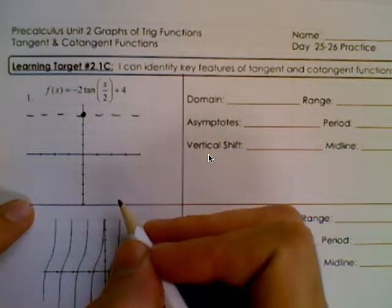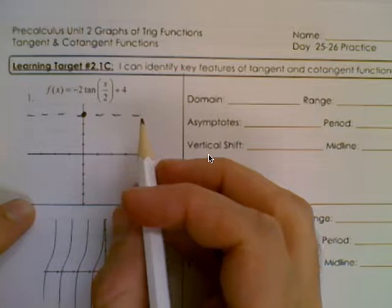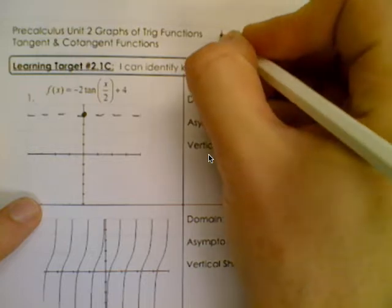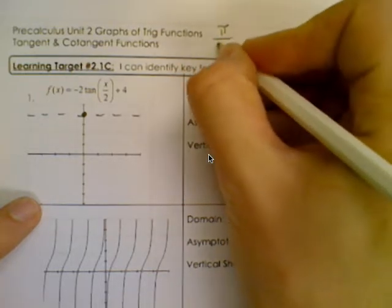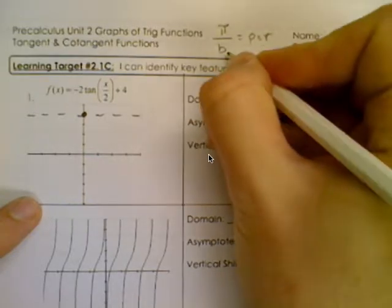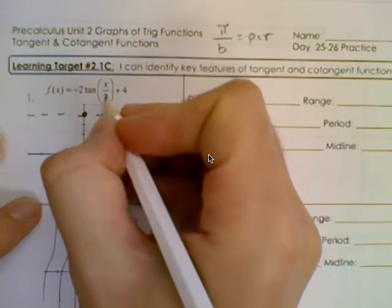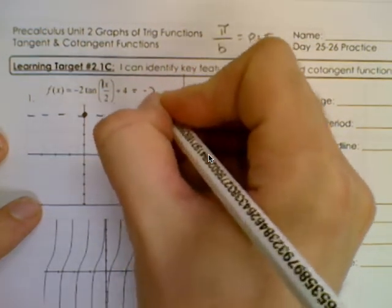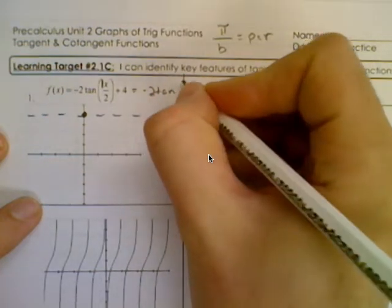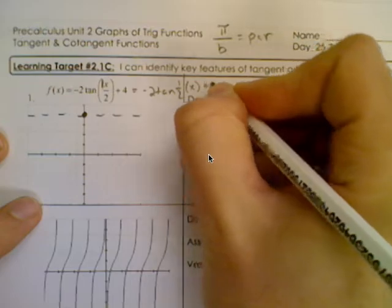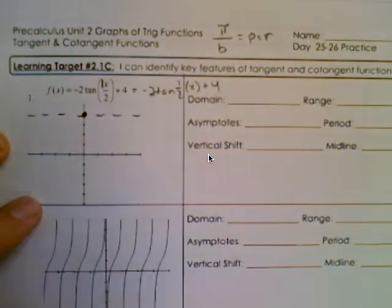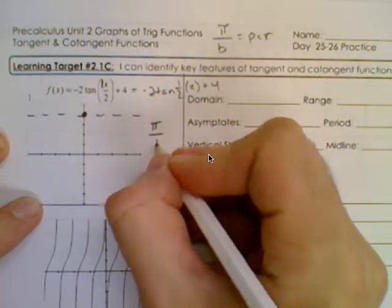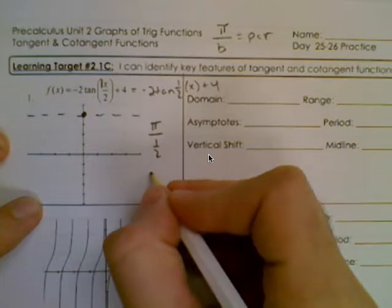The next most important thing we have to find is where the asymptotes are going to be and where the other points will be on this graph. The key thing you have to know for tangent is the relationship between pi and its b value. If you take pi divided by b, it gives you the period. In this equation, it's a little hard to see what b is, but this is really negative 2 tangent of 1 half x plus 4. So our period is pi divided by that b value, and pi over 1 half is 2 pi.